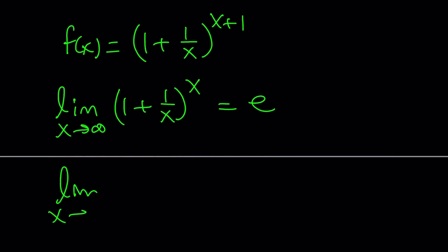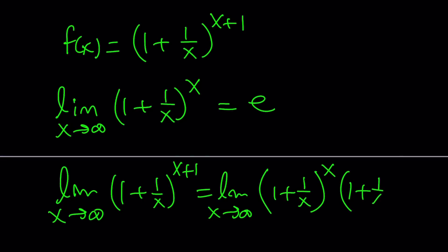What happens if we try to take the limit as 1 plus 1 over x to the power of x plus 1 as x approaches infinity? I can definitely go ahead and separate this, split it up into two factors, like 1 plus 1 over x to the power of x and 1 plus 1 over x to the power of 1, or just 1 plus 1 over x.